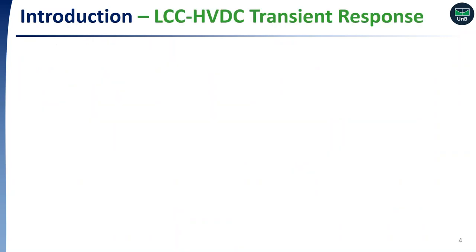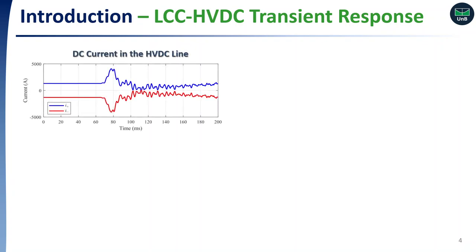Aiming to understand the problem better, let's see an example of the transient performance of LCC-HVDC links during AC faults taking place nearby. These are the DC currents in a bipolar system. As one can see, converters' responses lead to quite distorted DC currents after the AC fault takes place. During this time, commutation failures may occur.